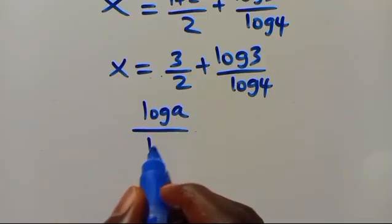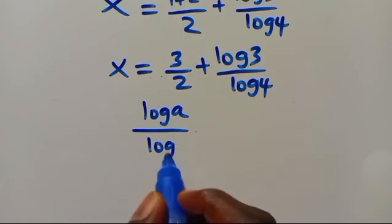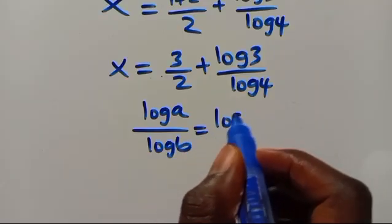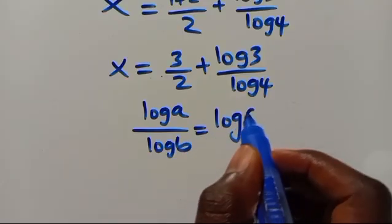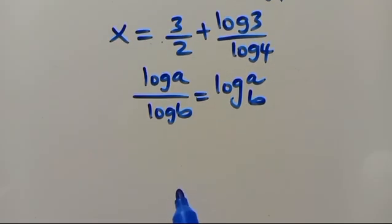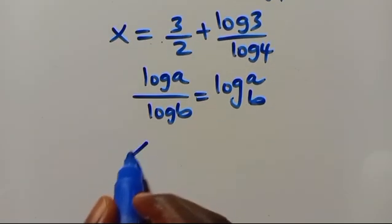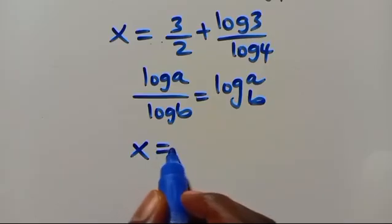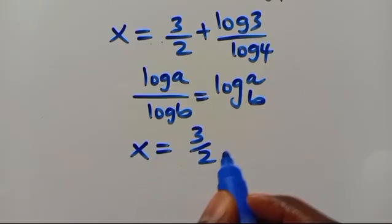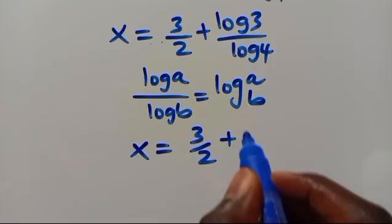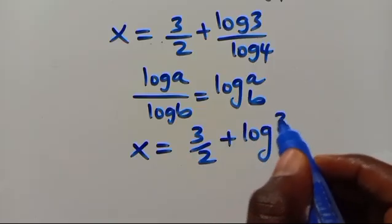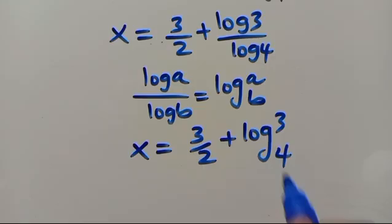Recalling the change of base rule: log a over log b equals log base b of a. So we have x equals 3 over 2 plus log base 4 of 3.